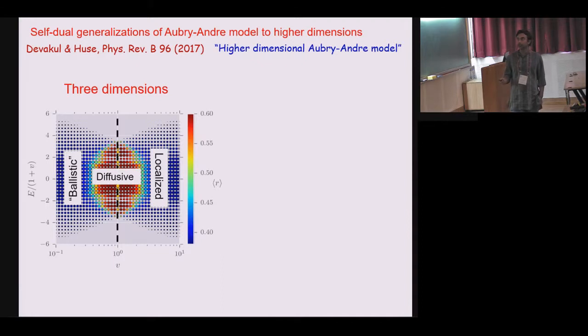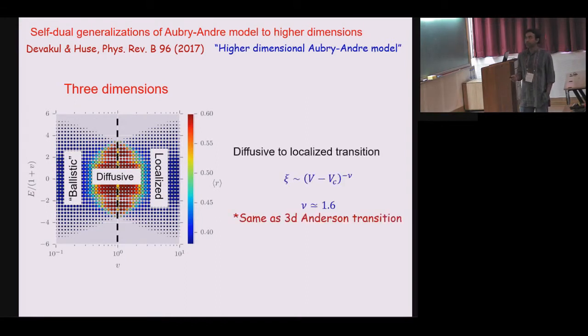There is a point which is V equal to 1 which is this black line which is the self dual point. However, what they found that in this model there are again ballistic and localized state as in 1D Aubry-Andre model. But these two phases are now separated by an intervening phase which is a diffusive metallic phase. And this diffusive metallic phase comes in between and there is a mobility edge in the general feature that you have a transition from localized to diffusive to ballistic phase in 3D.